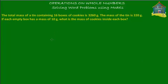Welcome to homecampus.com.sg. Let's solve another word problem on whole numbers. The problem says: the total mass of a tin containing 16 boxes of cookies is 3260 grams. The mass of the tin is 220 grams. If each empty box has a mass of 10 grams, what is the mass of cookies inside each box?